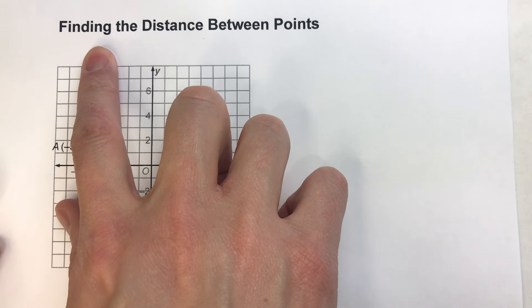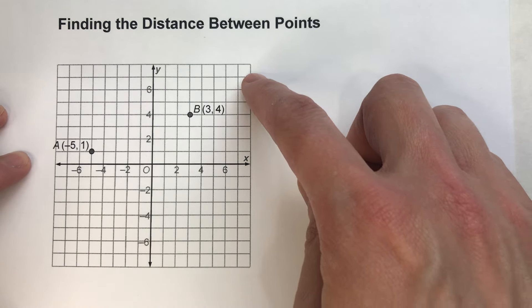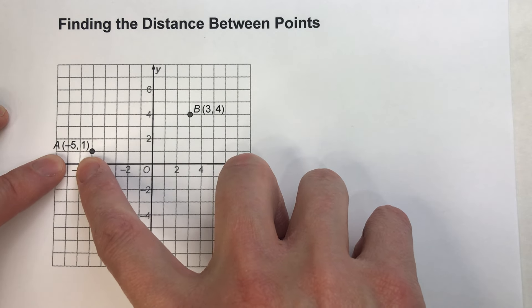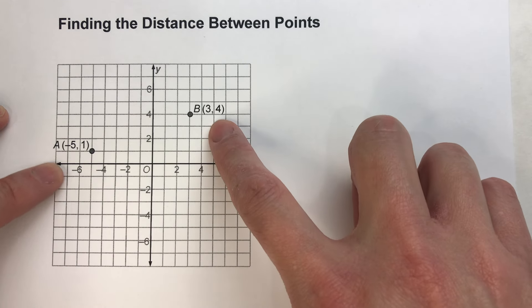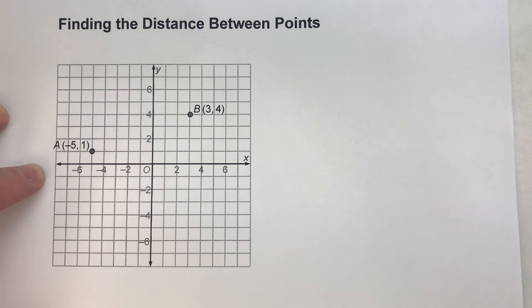Today we are going to be finding the distance between two points on the coordinate grid. Look at this example right here. I've got point A, which is negative 5, 1. I've got point B, which is 3, 4. So I want to find the distance between those two points.